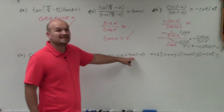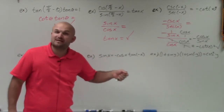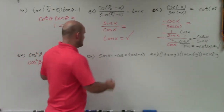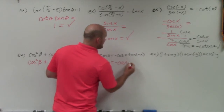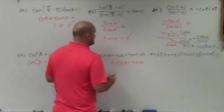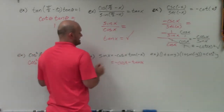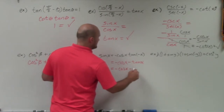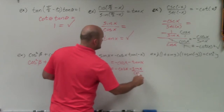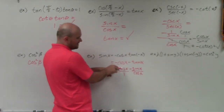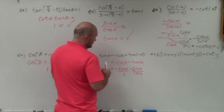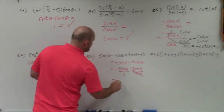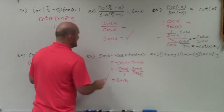Tangent is an odd function, so tangent of negative x equals negative tangent of x. I'll work on the right side here since it's more difficult. I have negative cosine of x times negative tangent of x. Rewriting tangent in terms of sines and cosines gives negative cosine of x times negative sine of x over cosine of x. The cosine terms cancel, the two negatives multiply to give positive 1, leaving sine of x — which matches the left side and is now verified.